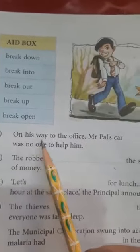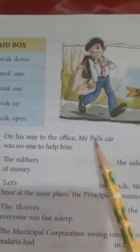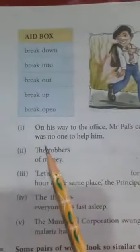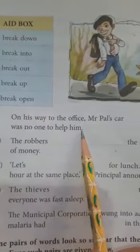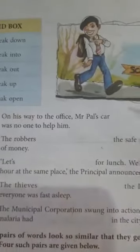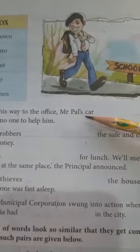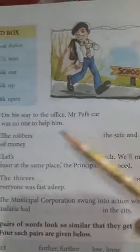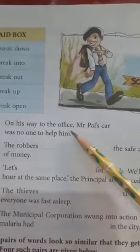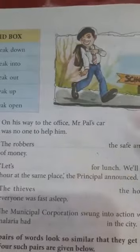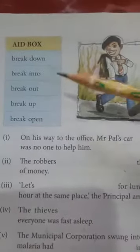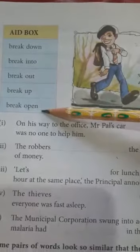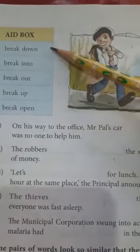The first sentence is: 'On his way to the office, Mr. Paul's car dash — there was no one to help him.' Office jate time Mr. Paul ki car ko kya ho gaya — there was no one to help him. The options we have are: breakdown, break into, break out, break up, and break open.